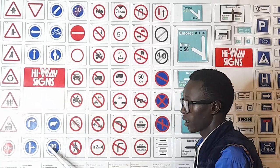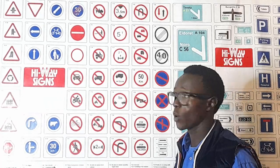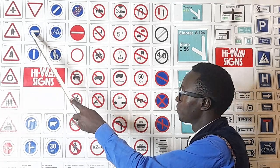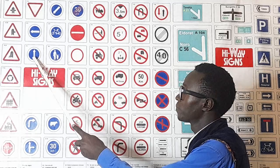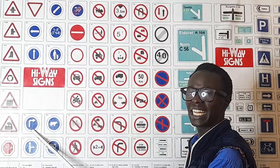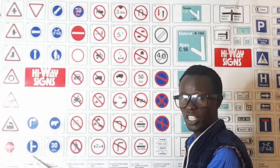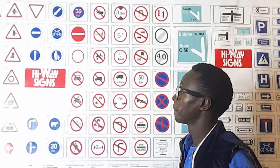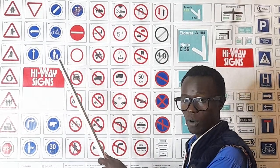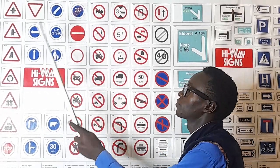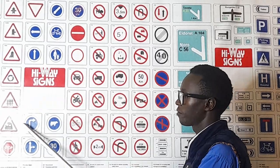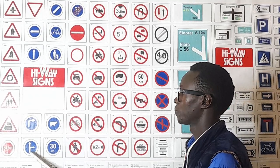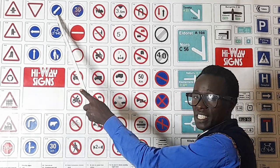Now let us go to compulsory signs. Compulsory sign number one: direction to proceed forward — vehicle traveling straight. Vehicle turning right at junction. Vehicle traveling straight or turning right at junction. Pass to the left.